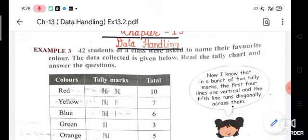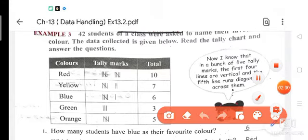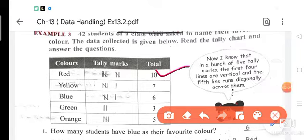Colors are red, yellow, blue, green, orange. Now the data collected is given below. Read the tally chart and answer some questions. You can see red — total is 10. For red color, how many students? Favorite color is red: 10 students. Yellow: 7, blue: 6, green: 3 and orange: 5.